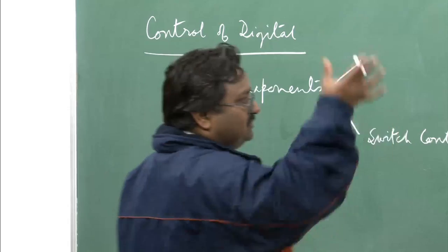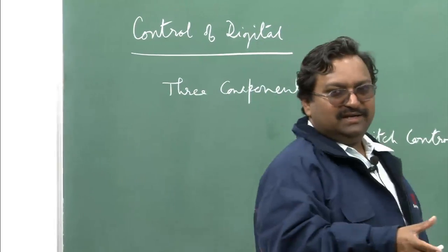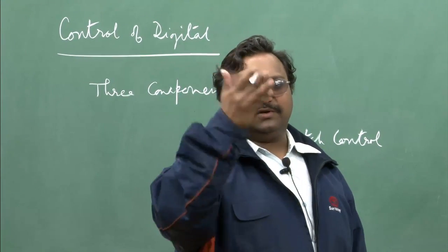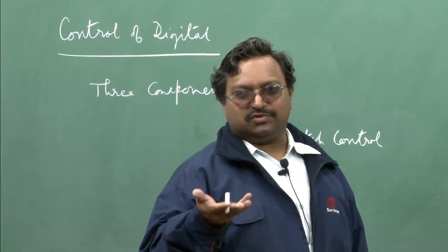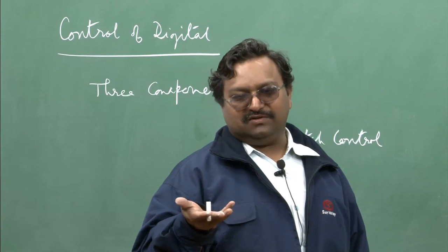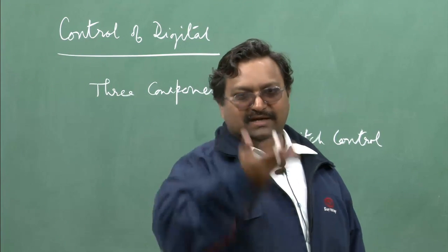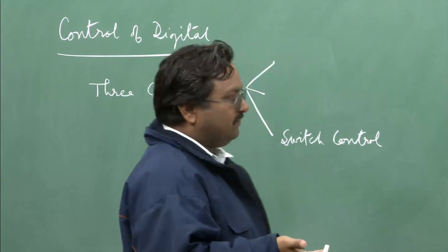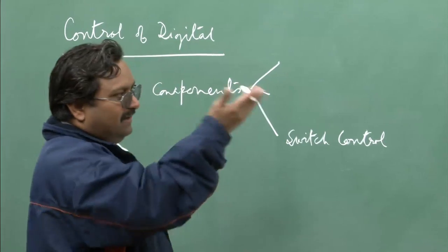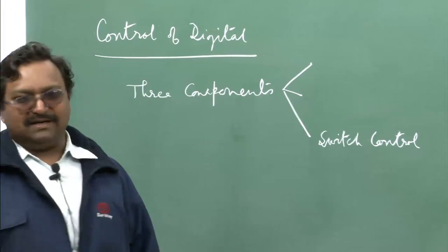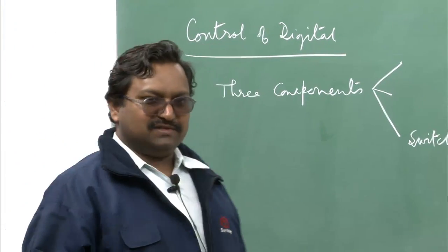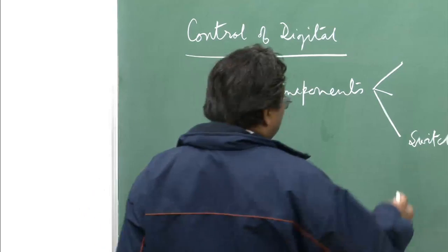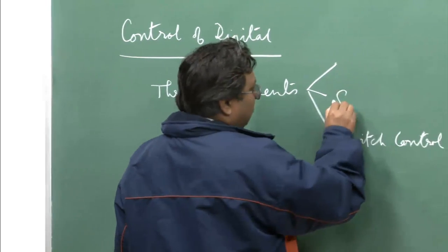Similarly, for a space switch, again it is a memory — in a column it will figure out which particular junction has to be switched on in which particular time slot. Again, it is a control memory — that is switch control. Again, the third stage time switch has a similar kind of structure. Next, we are going to always have a switch block control.